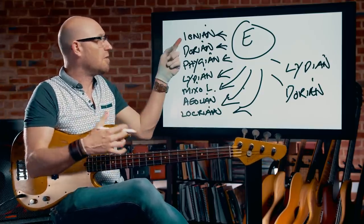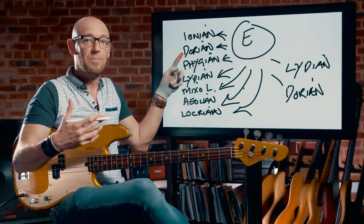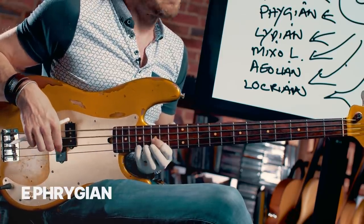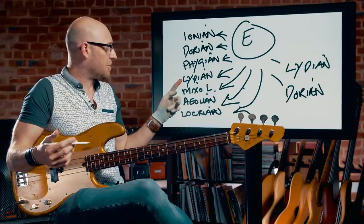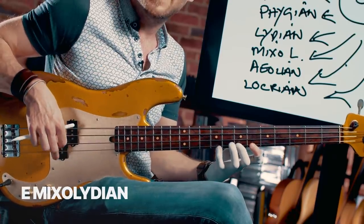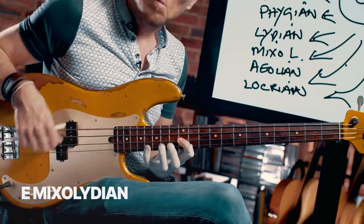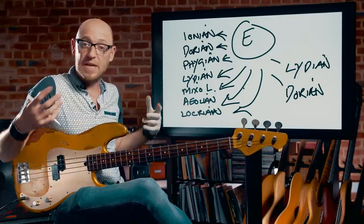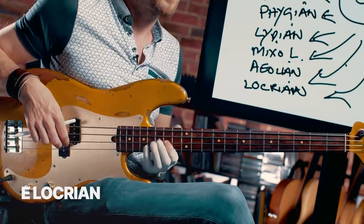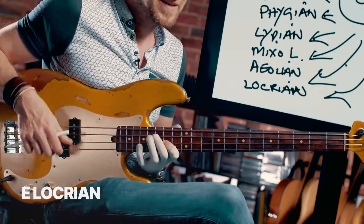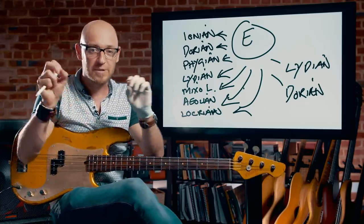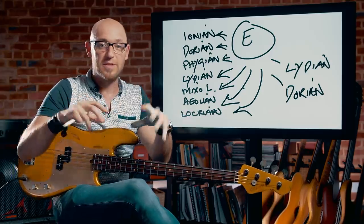Ionian is just a major scale. Dorian is a minor with the natural 13. Phrygian has got a flat 9 in it. Lydian has got the sharp 11, as we've already talked about. Mixolydian is like a major scale but with a flat 7. Then there's Aeolian, which is a natural minor with a flat 13. And then Locrian has a flat 9 but also a flat 5. So they've all got their own different personalities, and as I practice them, I make sure I can pick out those key differences that really give them their character.